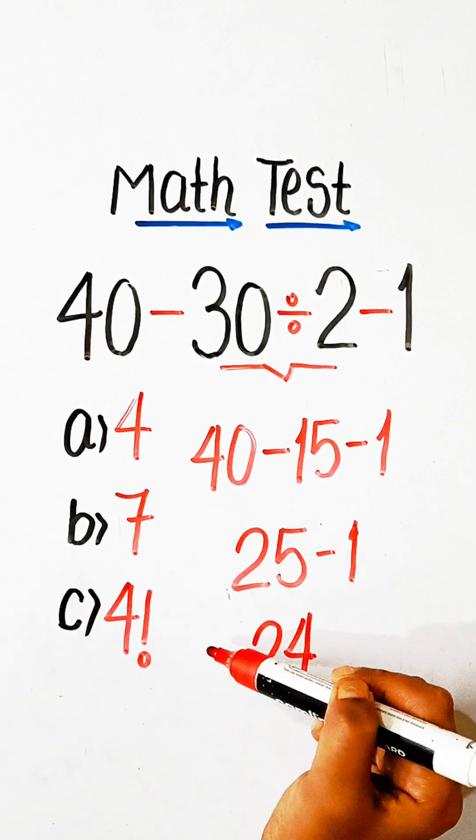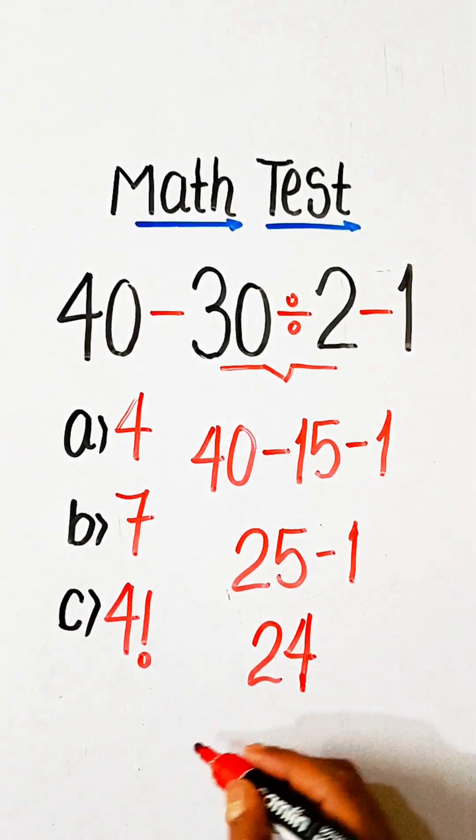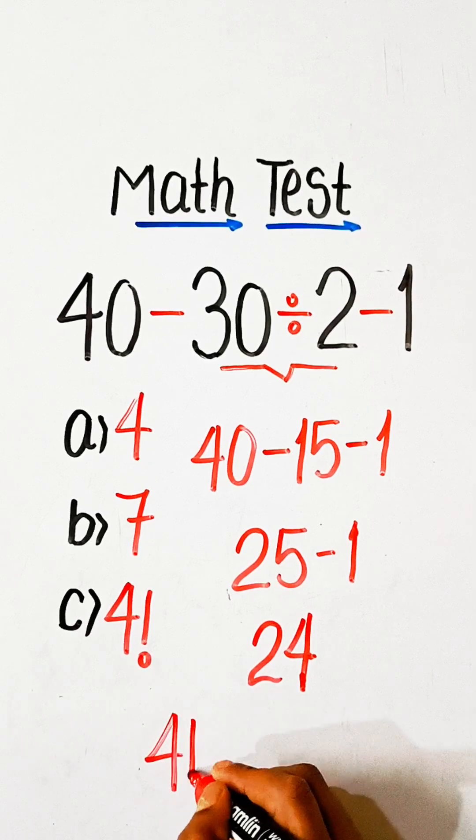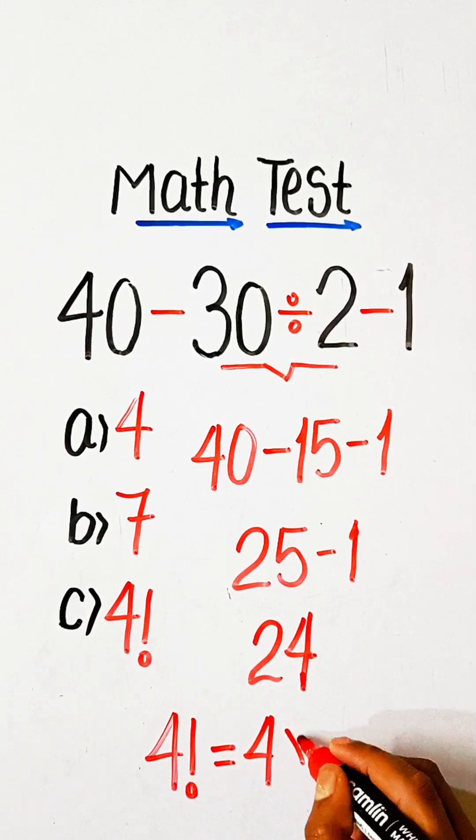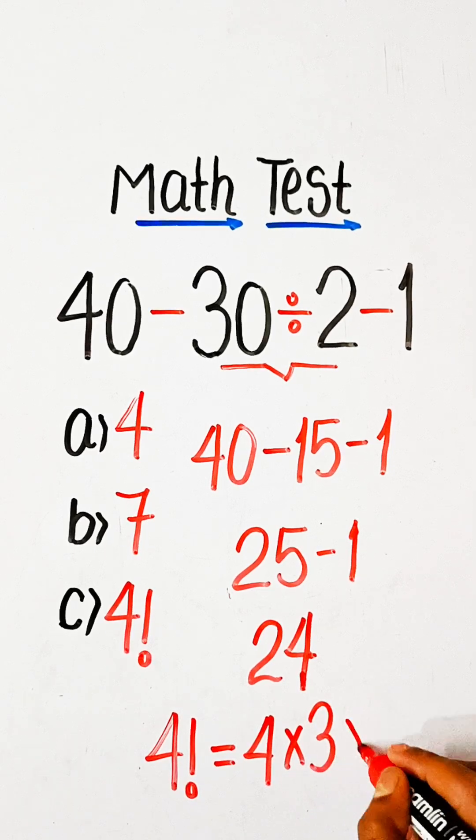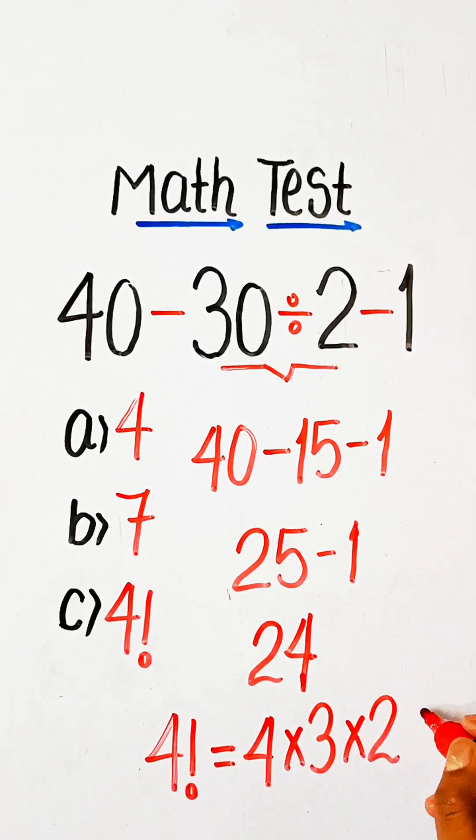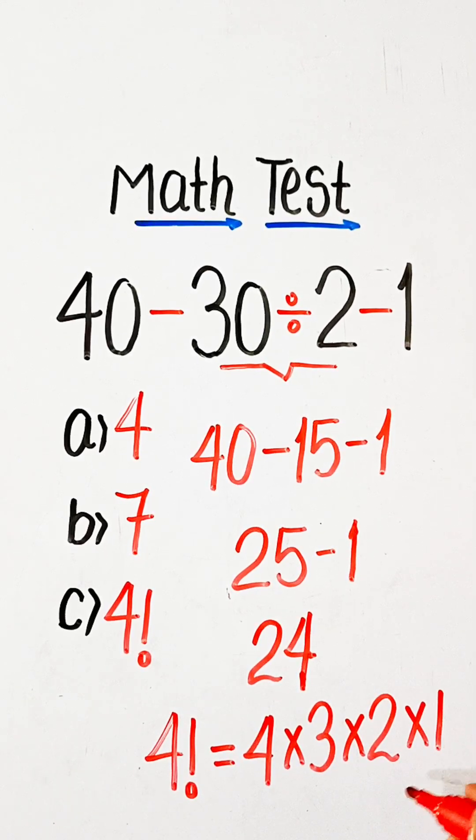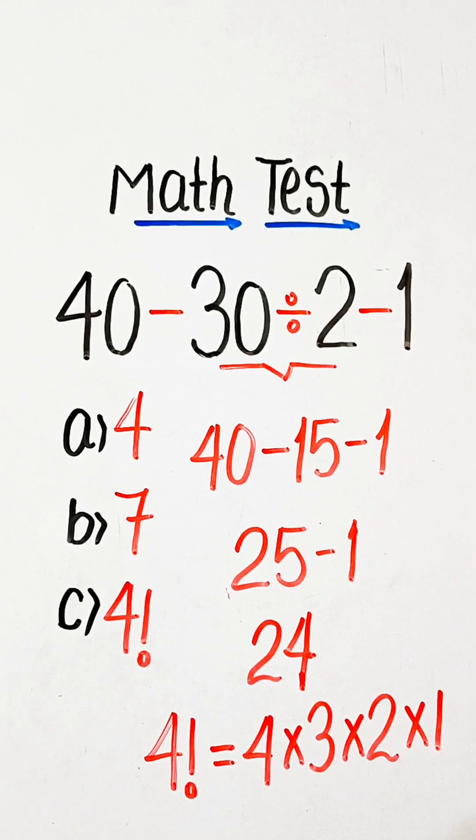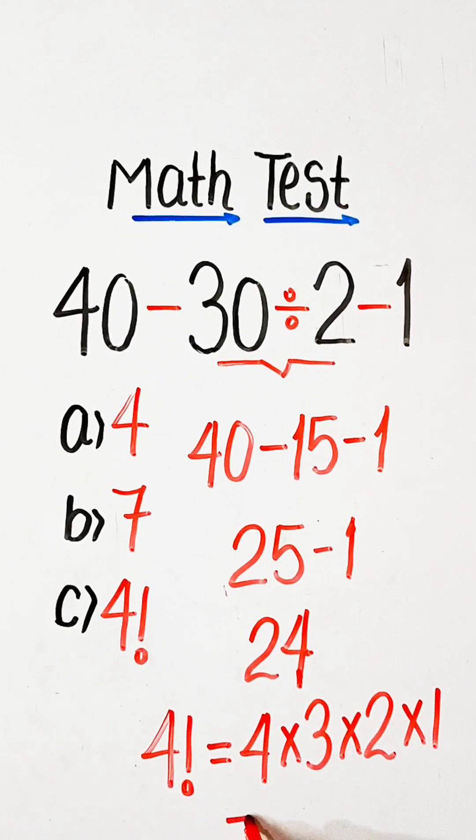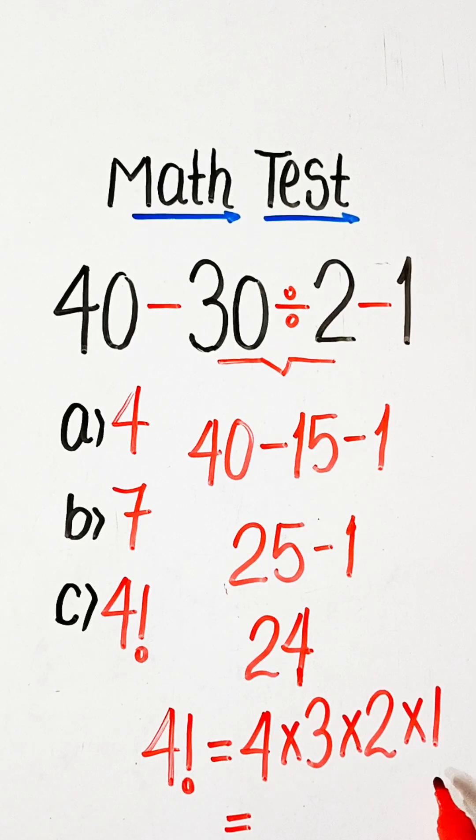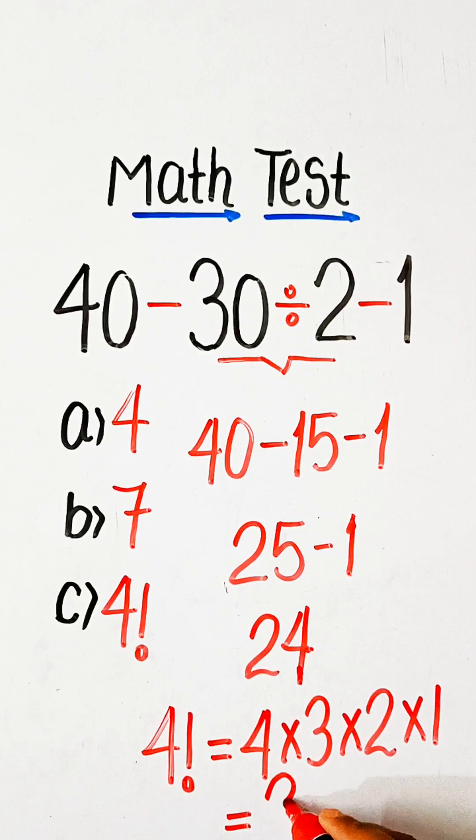And we know that 4 factorial equals 4 into 3 into 2 into 1, and after solving this we will get 24.